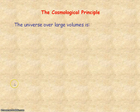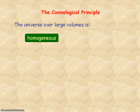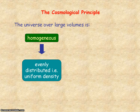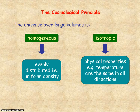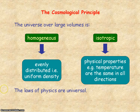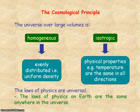The cosmological principle states that the universe, over extremely large volumes, is homogeneous — meaning it's uniform and evenly distributed — and it's isotropic, meaning it's the same in all directions. Also, the laws of physics are universal, so the laws of physics that apply on Earth will apply anywhere in the universe.